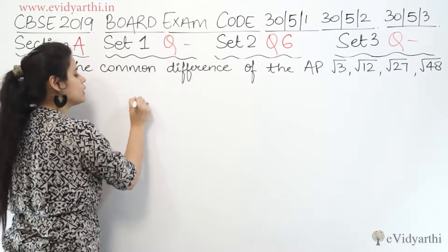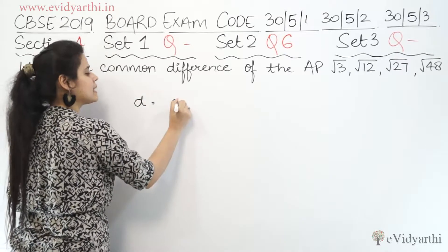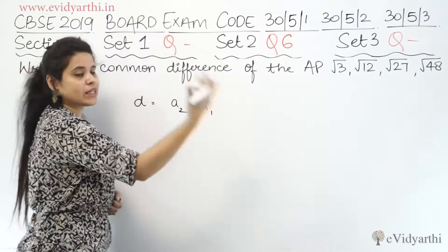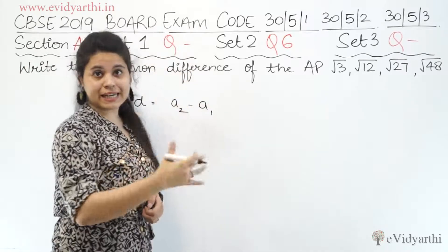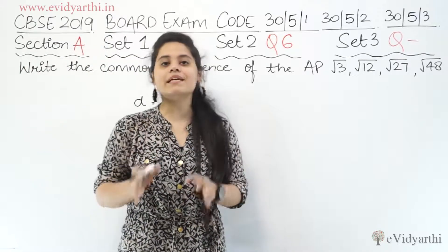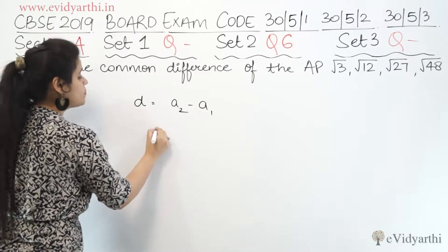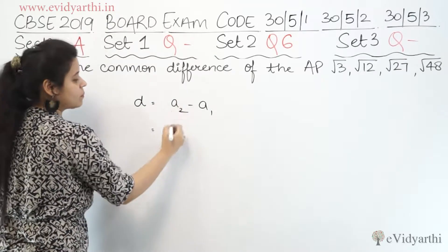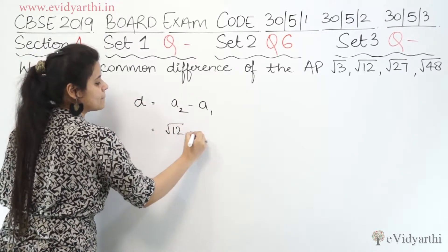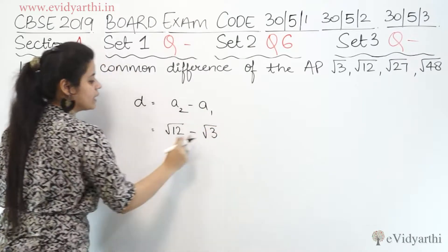We know that the common difference can be found as the second term minus the first term, or the third term minus the second term, or the fourth term minus the third term. So here, second term minus first term is √12 minus √3.